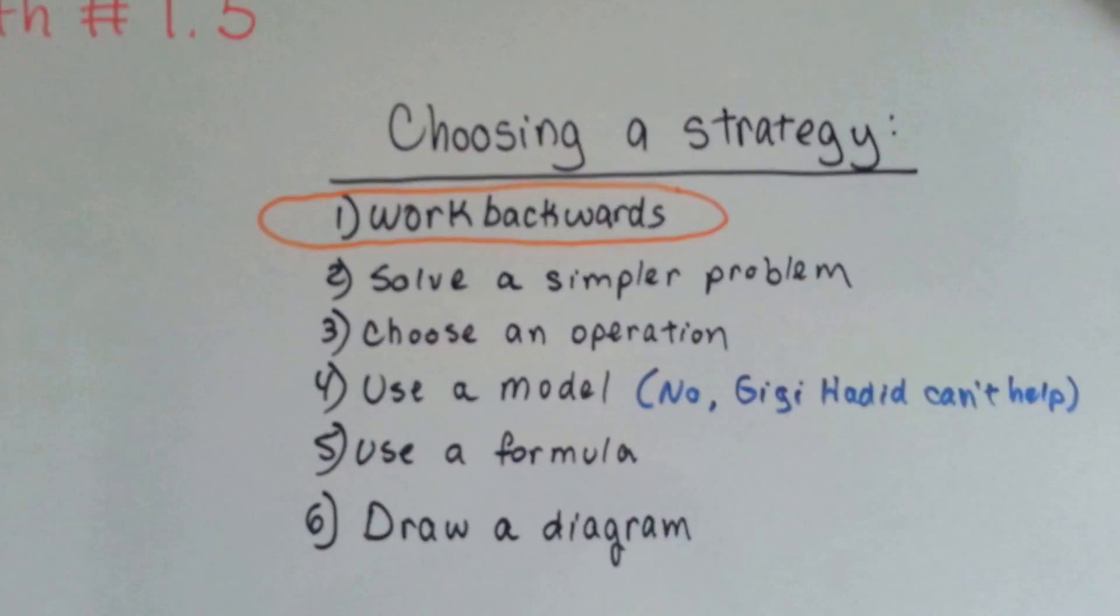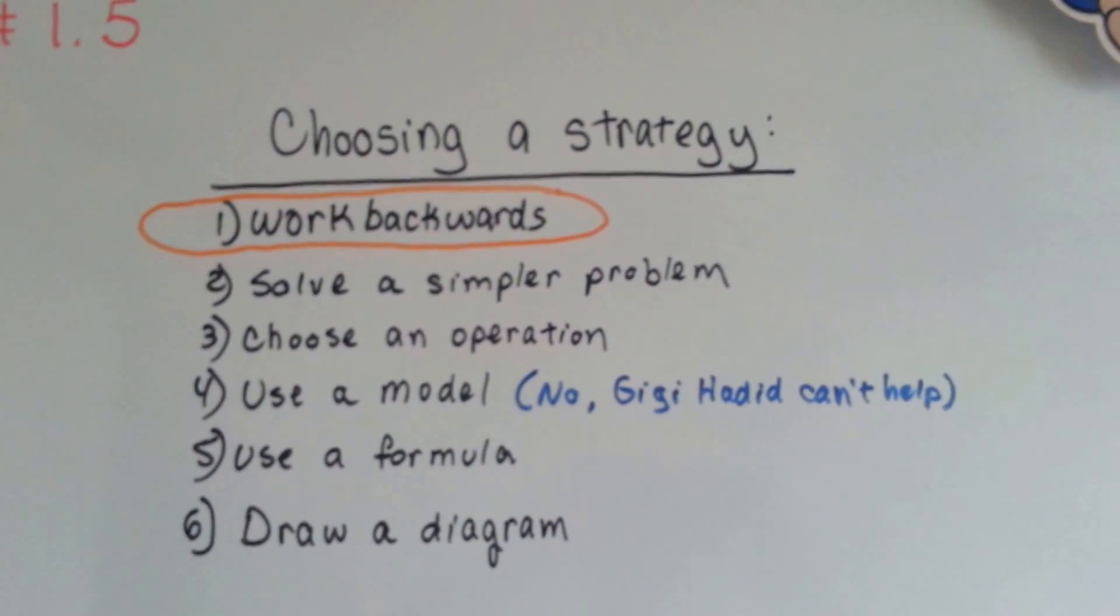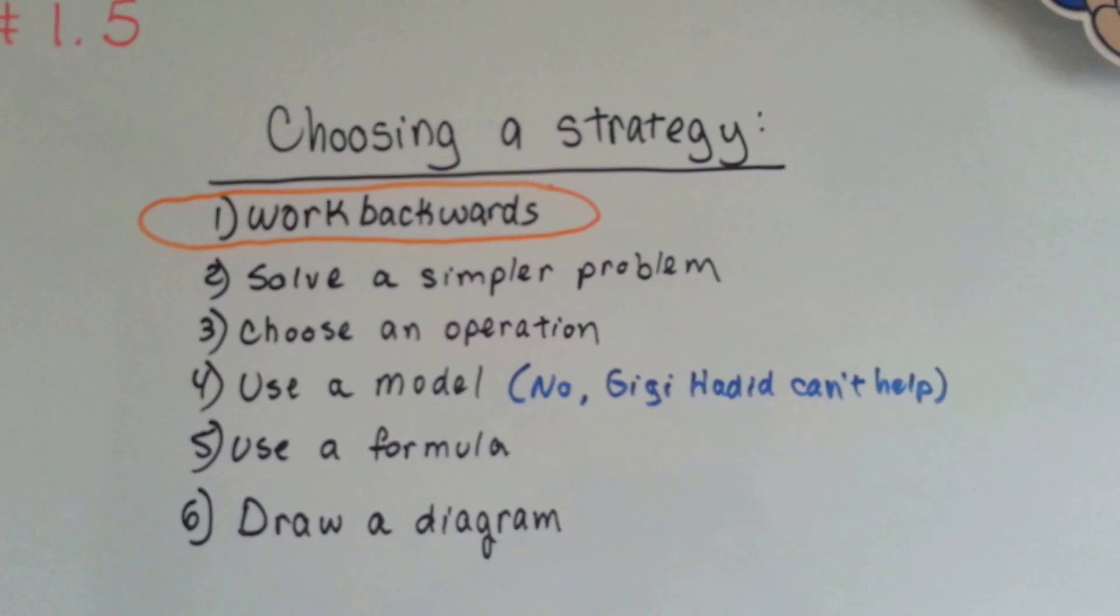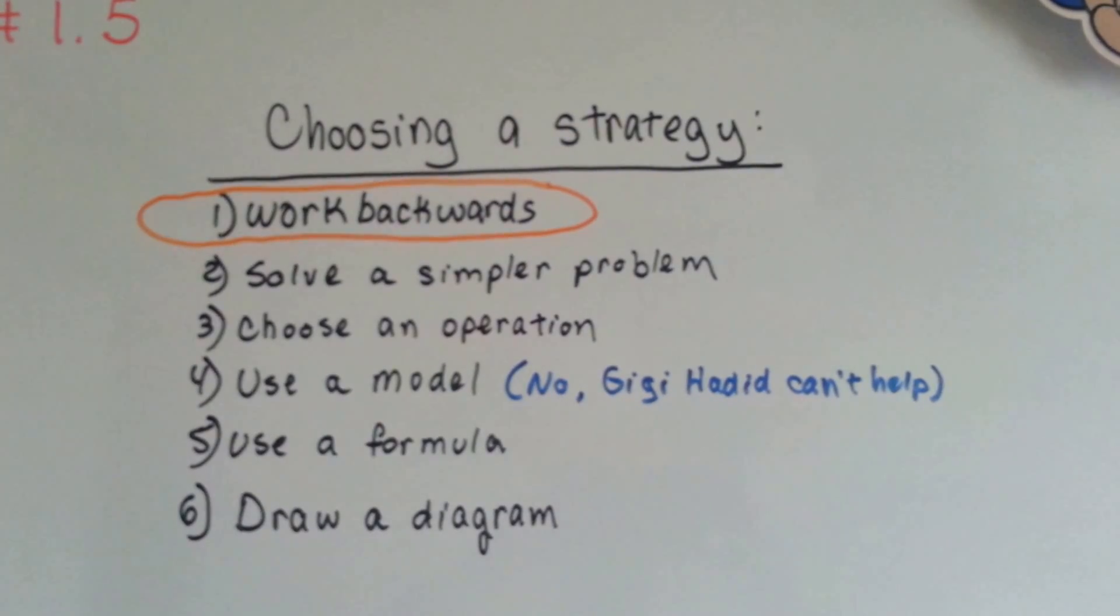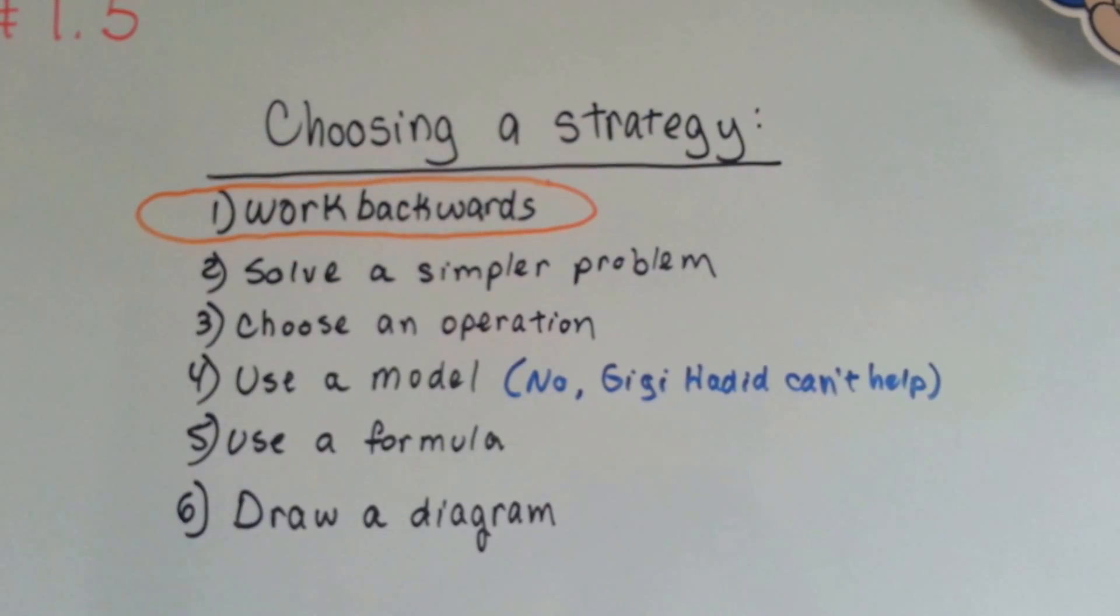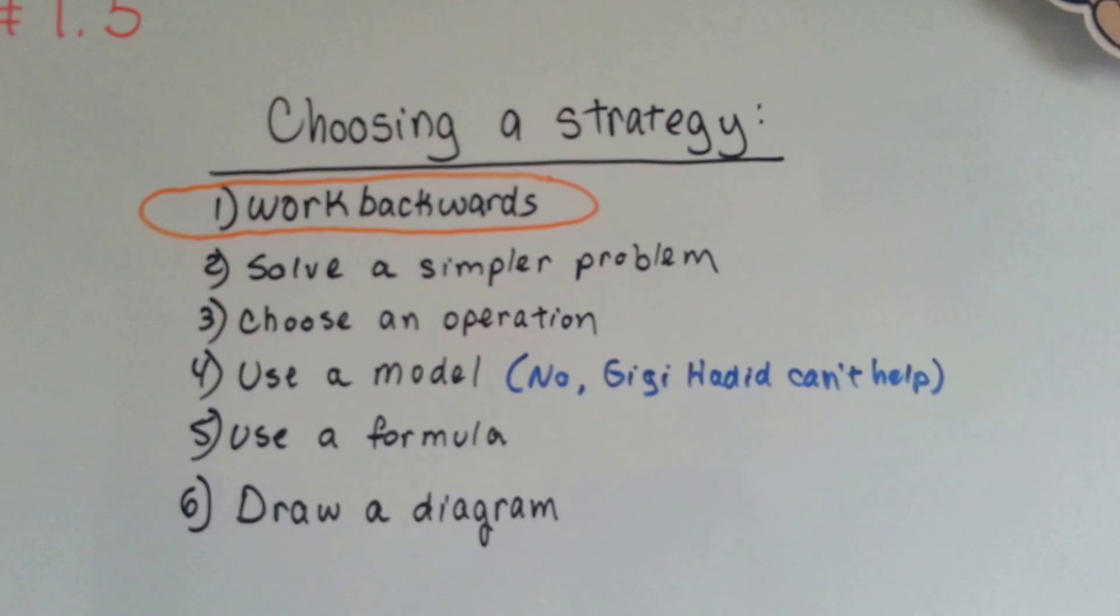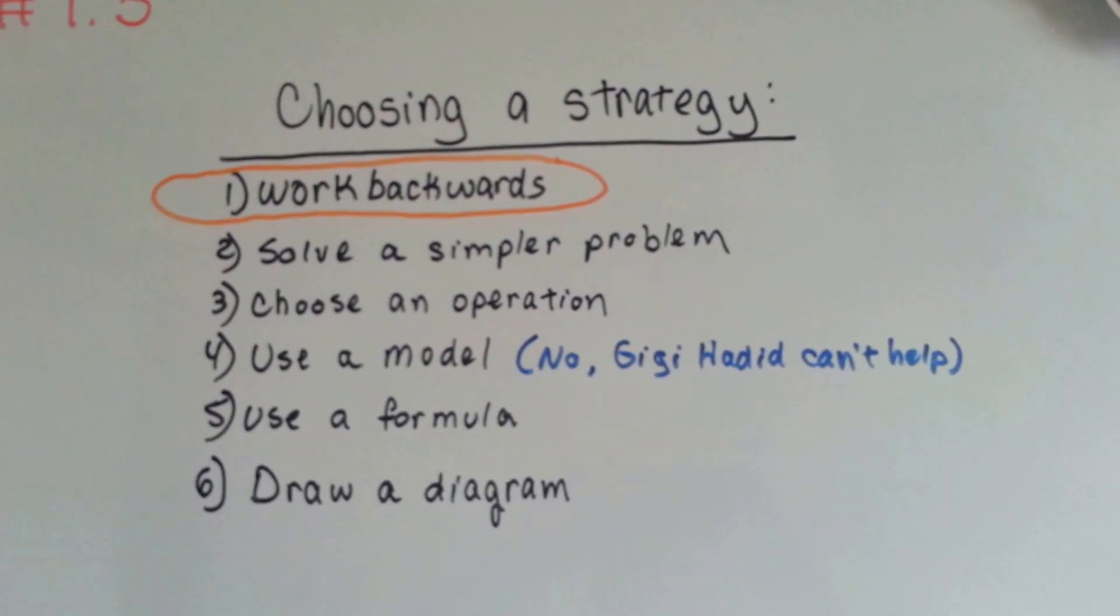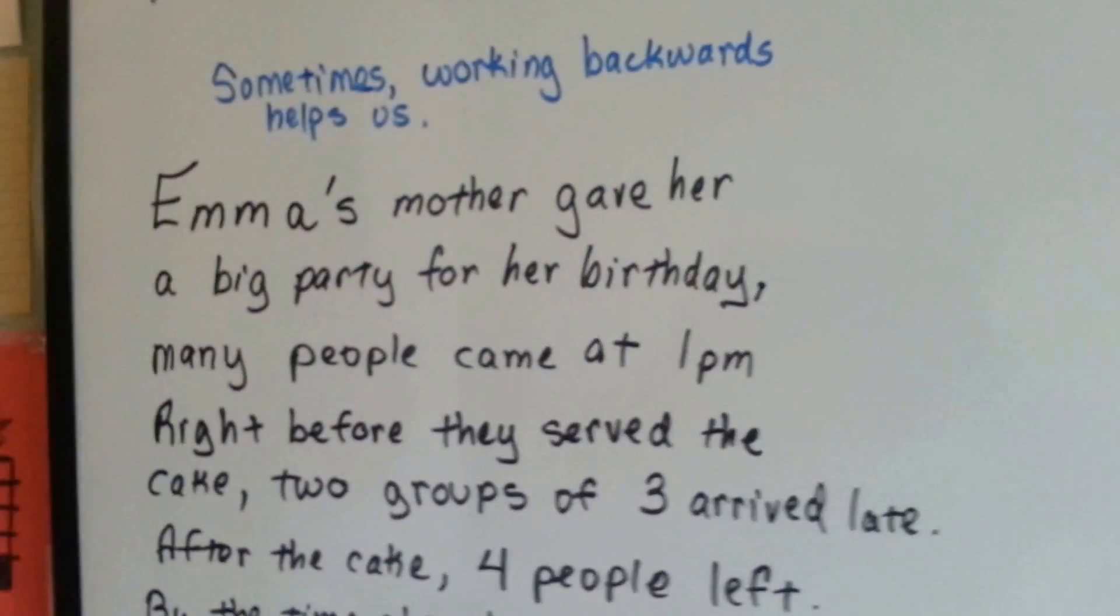We've done a lot of these, so I hope you choose a strategy. In this one we're going to work backwards, but our other choices would have been solve a simpler problem, choose an operation, use a model (and no, Gigi Hadid can't help), use a formula, or draw a diagram. So we're going to work backwards, because sometimes working backwards helps us.